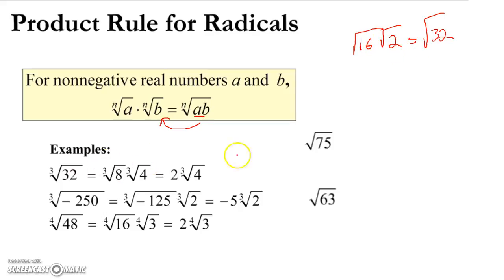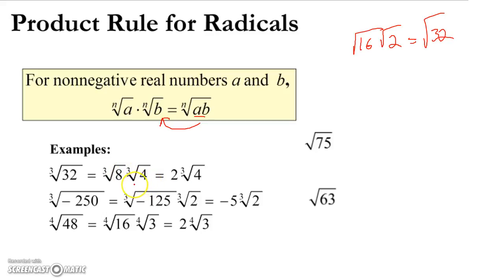Here are some examples. The cubed root of 32 is equal to the cubed root of 8 times the cubed root of 4. This is how we technically simplify these things.